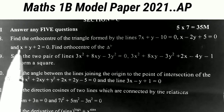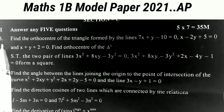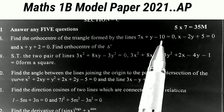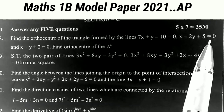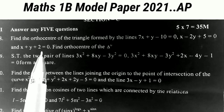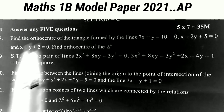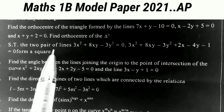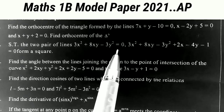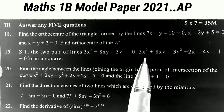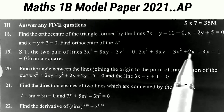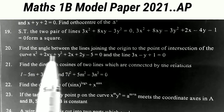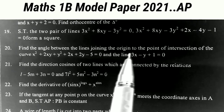The 18th sum: find the orthocenter of the triangle formed by the lines 7x + y - 10 = 0, x - 2y + 5 = 0, and x + y + 2 = 0. This is the most important question. The next one: show that the two pairs of lines 3x² + 8xy - 3y² = 0 and 3x² + 8xy - 3y² + 2x - 4y - 1 = 0 form a square.